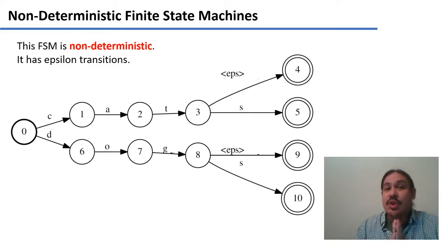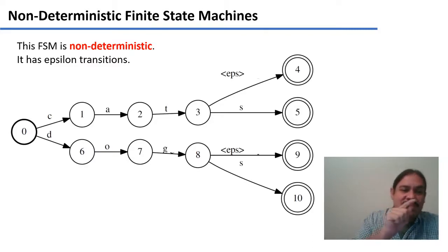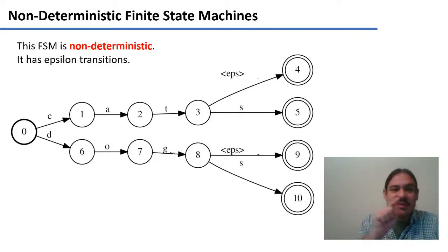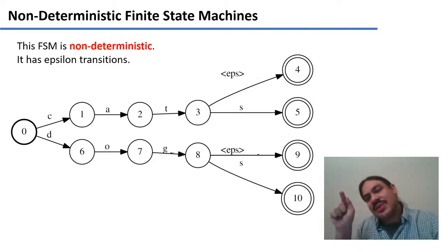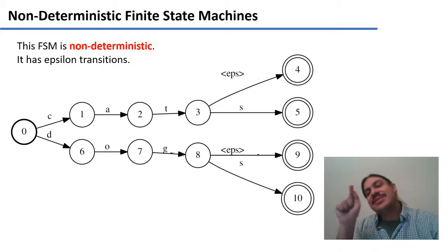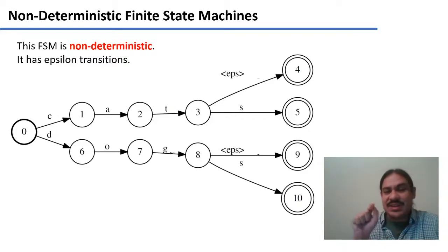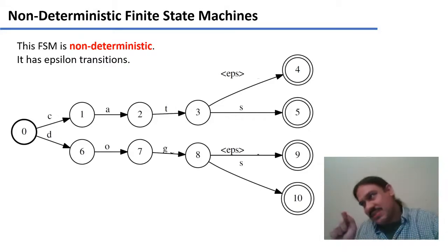Here we have an example of a non-deterministic finite state machine. It's non-deterministic because it has epsilon transitions. If you go from zero to one, two, three, four, you get cat with an epsilon transition, which produces the singular of the word. Likewise for dog: zero, six, seven, eight, nine — dog with epsilon.